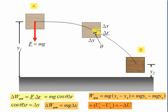So we conclude that the work done by gravity depends only on the vertical displacement and is independent of the path taken.